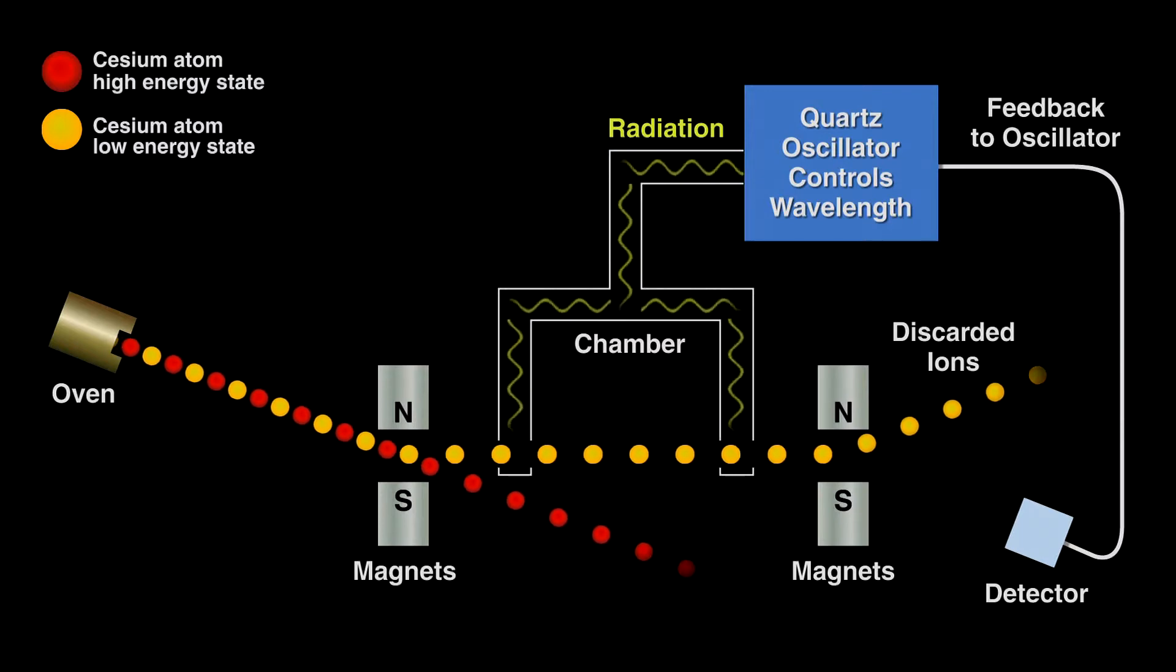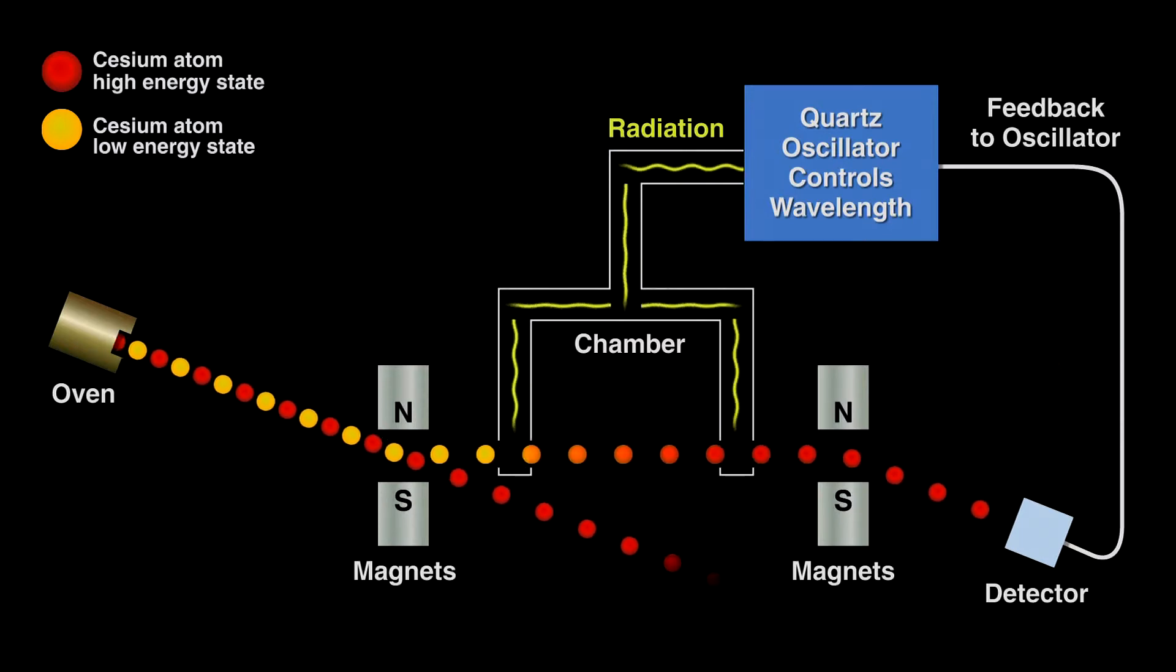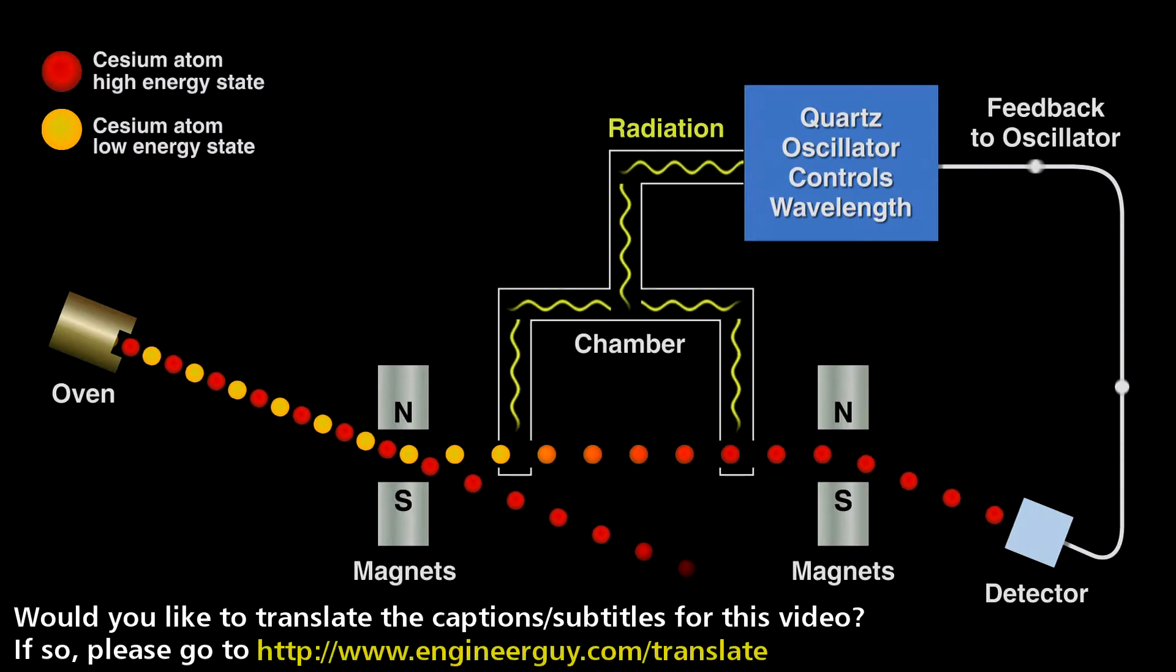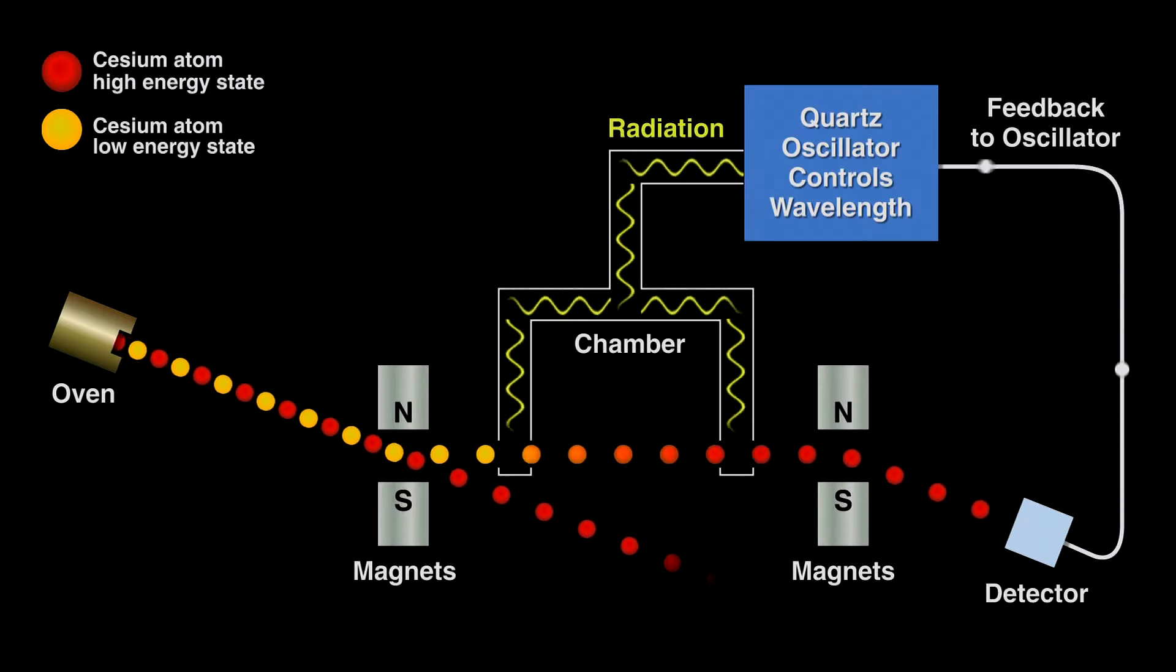This tells the electronics to zap the quartz oscillator and correct the period of oscillation. It does this by applying the proper voltage that, via the piezoelectric effect, taps the quartz and restores its oscillations, thus creating a clock that loses less than a second over many million years.